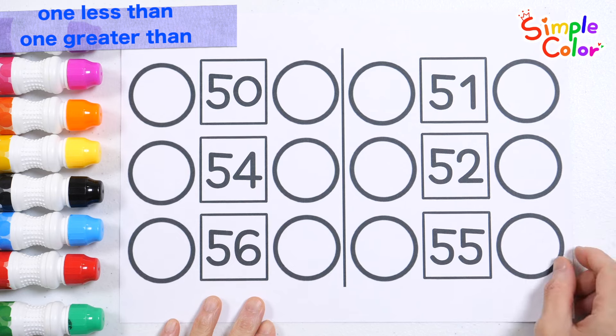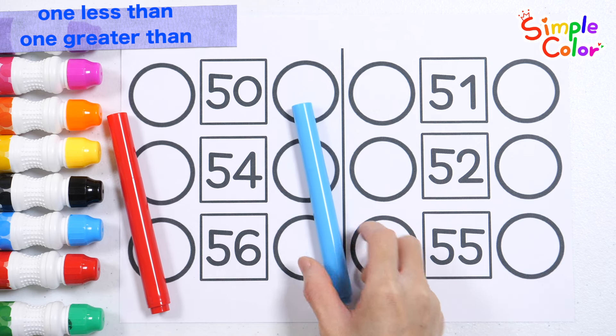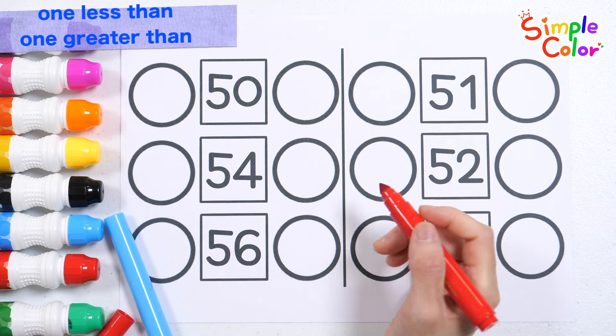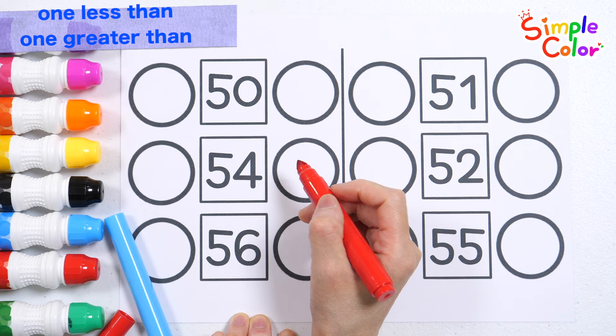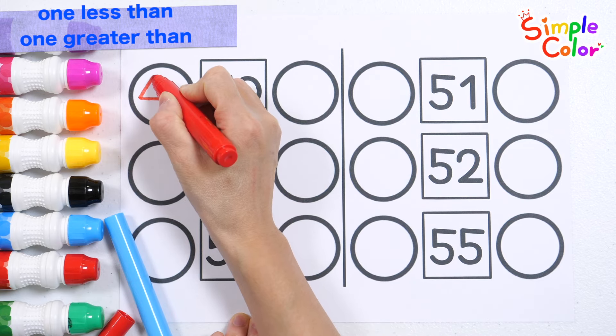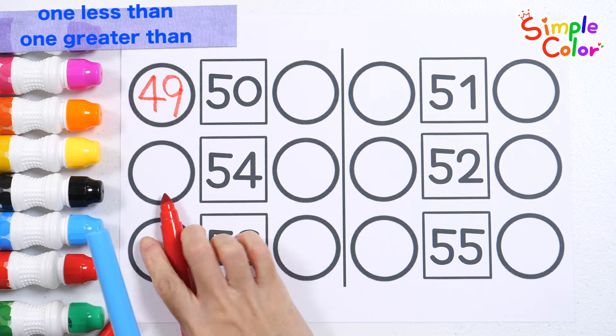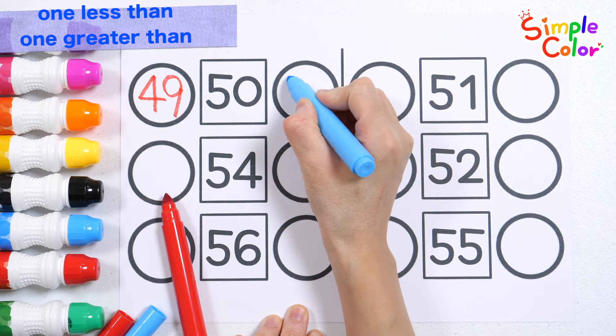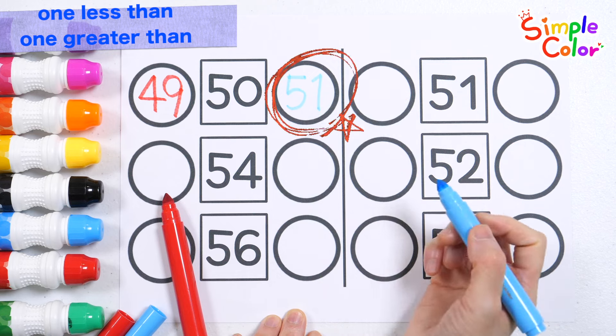Let's look at the numbers written in the squares and write the numbers that are one smaller in red and the numbers that are one larger in blue. 52. Read the numbers. 50. The number one less than 50 is 49. The number one greater than 50 is 51.